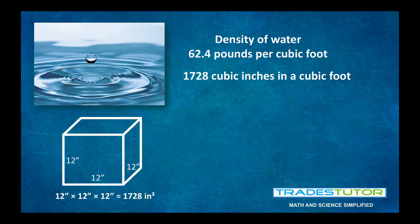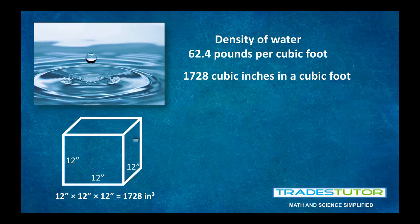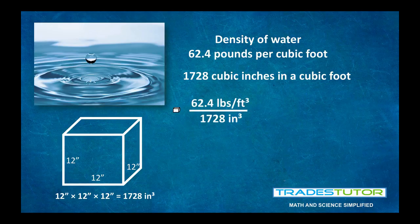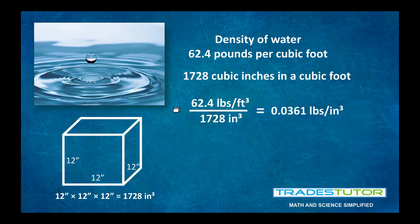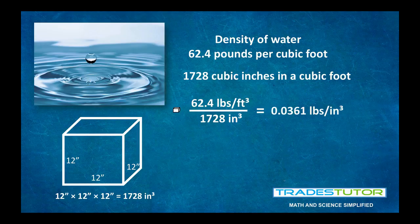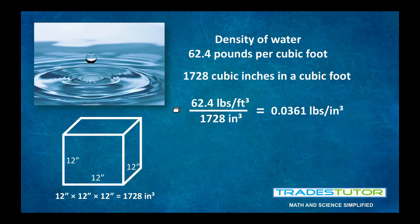So, a whole cubic foot weighs 62.4 pounds. How much does a cubic inch weigh? Well, let's take one and let's take it out. Let's go through the math. 62.4 divided by 1728. That gives us 0.0361 pounds per cubic inch. Right? Now, that's going to help us find PSI, or pounds per square inch. We're getting there.